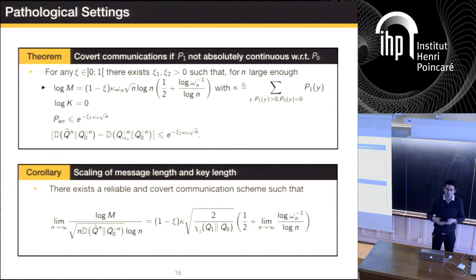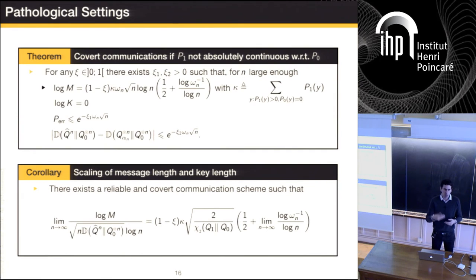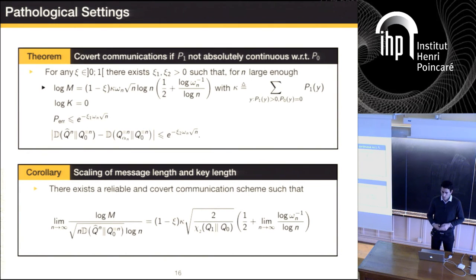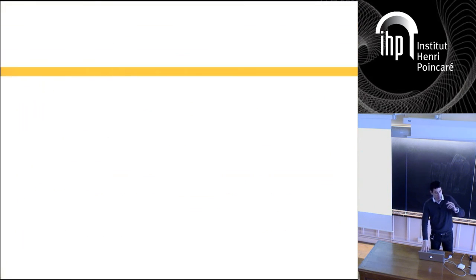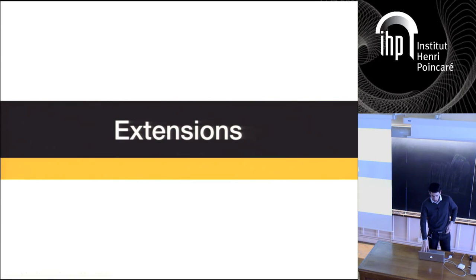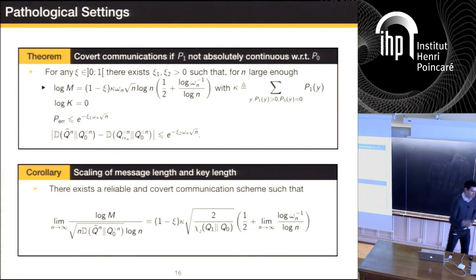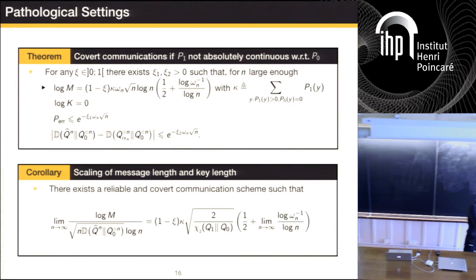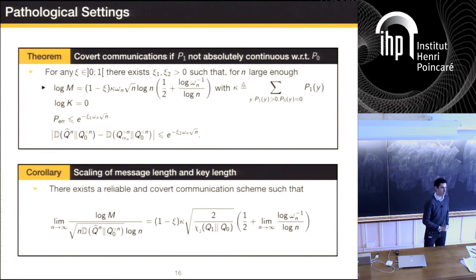Absolutely continuous means: P1 is absolutely continuous with respect to P0 if the support of P1 is included in the support of P0 — if P0 is zero then P1 has to be zero. From the warden's perspective: if Q1 is not absolutely continuous with respect to Q0, there are symbols that can only be reached when you transmit, so the warden will detect you with probability one.